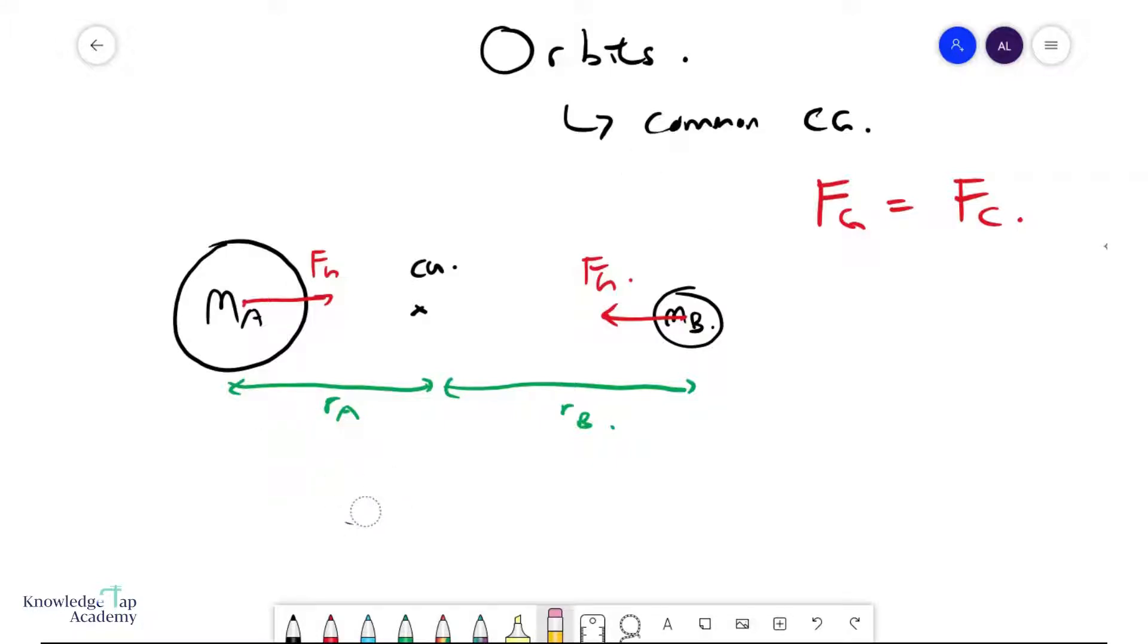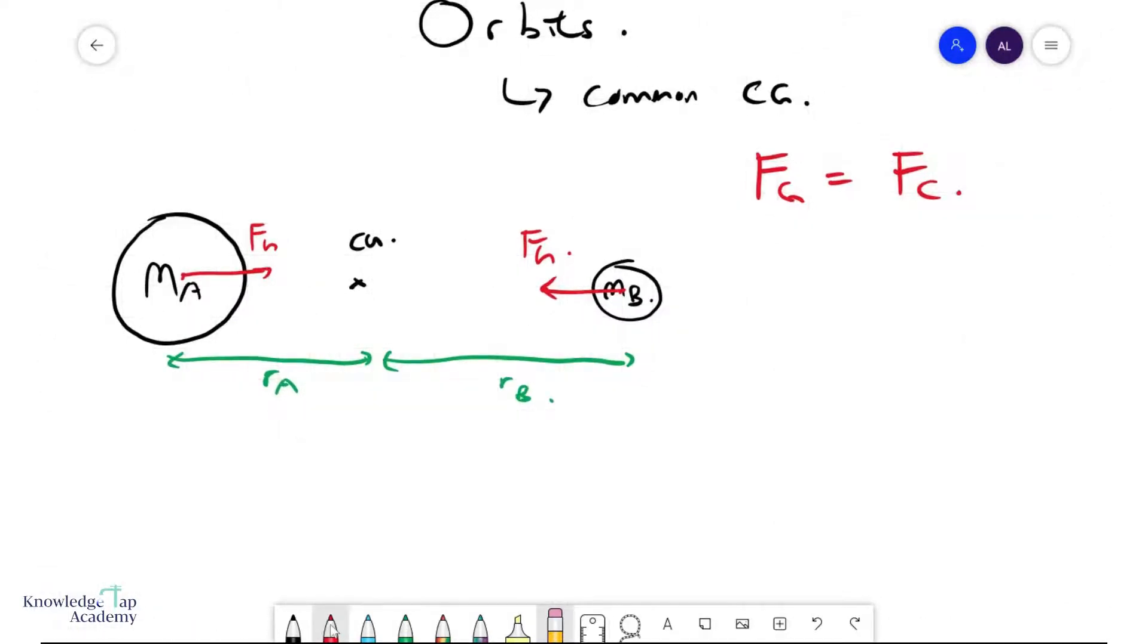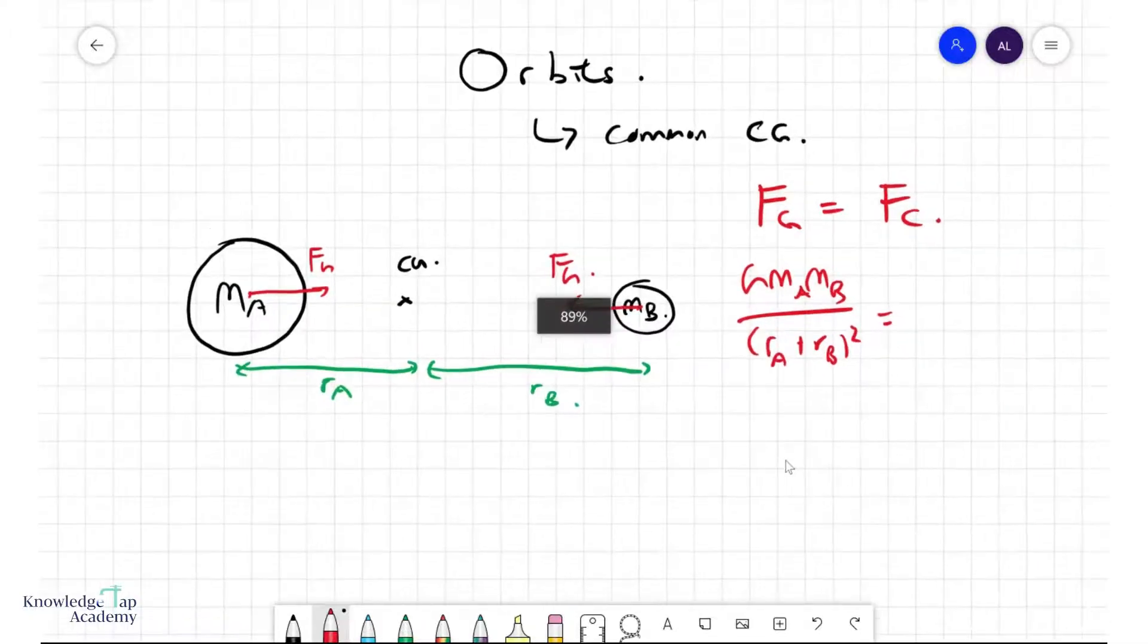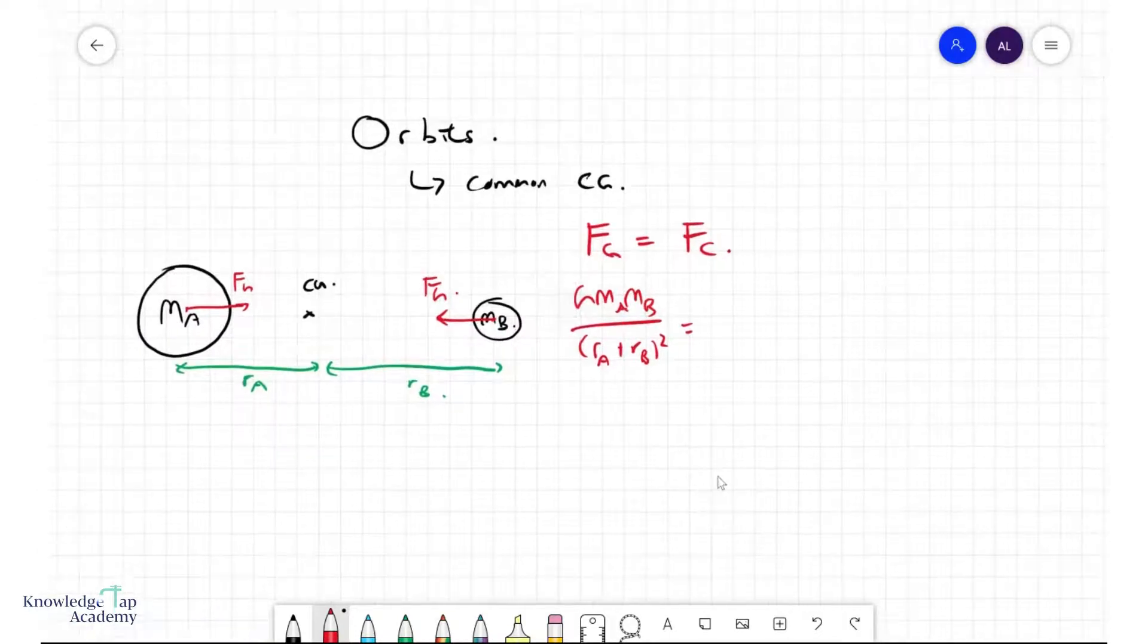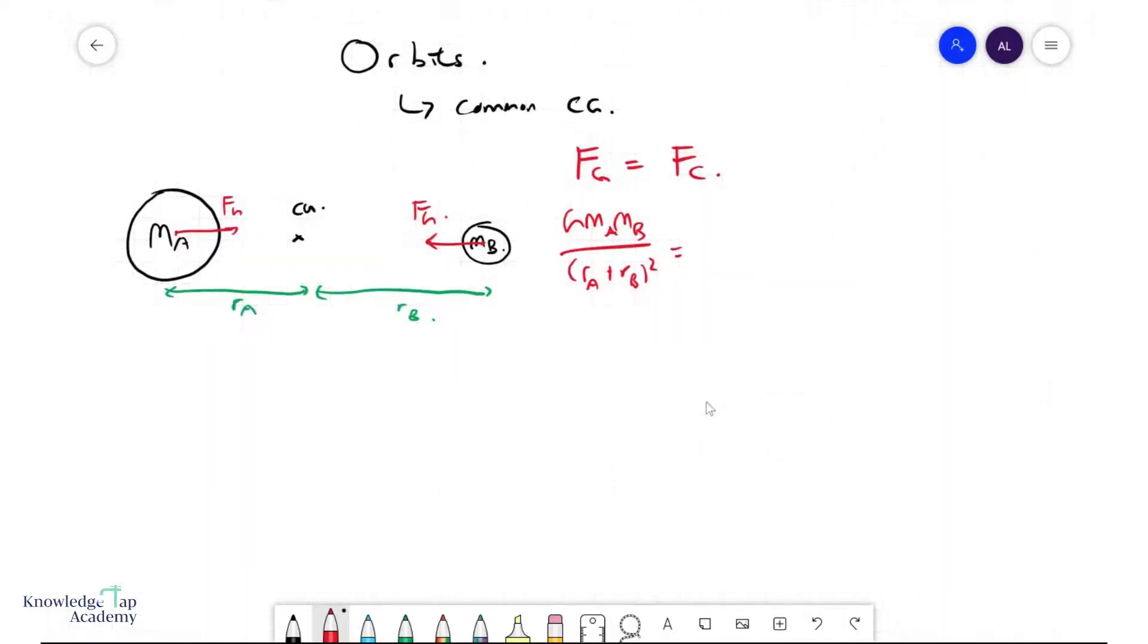Now what is interesting about this is that if I work out this fg equals fc a little bit more, we'll have G ma mb over ra plus rb squared, and this must equal to the centripetal force on ma and mb, and so this would be ma ra omega squared, and this also equals to mb rb omega squared, and that's your orbital model.